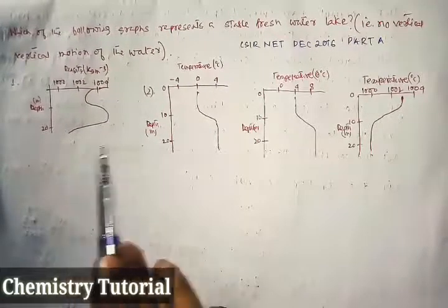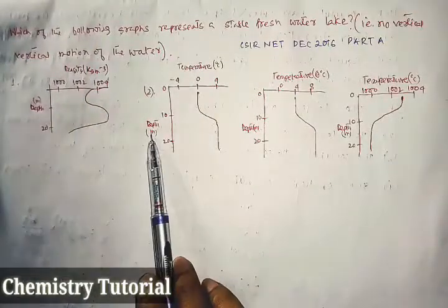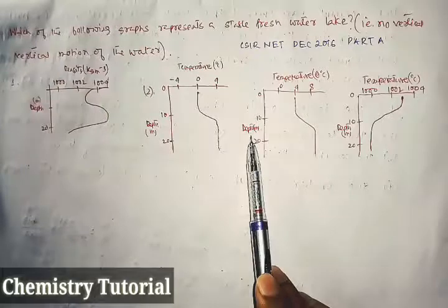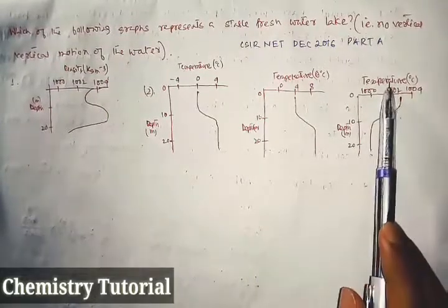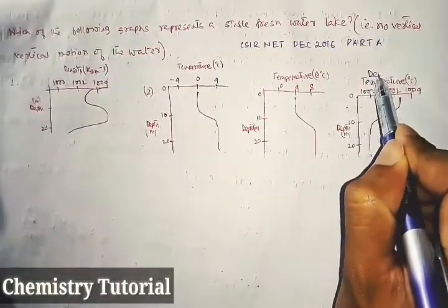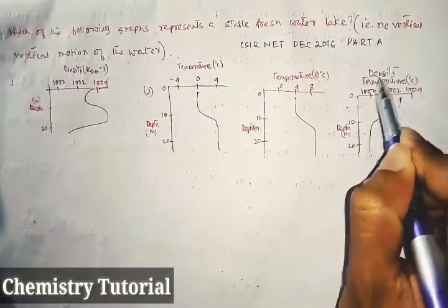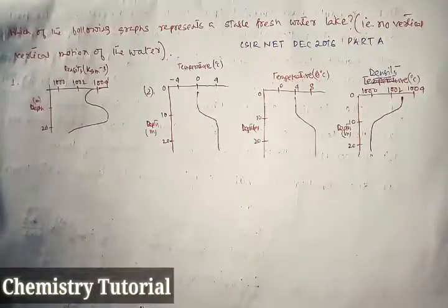There are four graphs given: one is density versus depth, temperature versus depth, temperature versus depth, and density versus depth. Sorry, this will be density versus depth, not temperature versus depth.